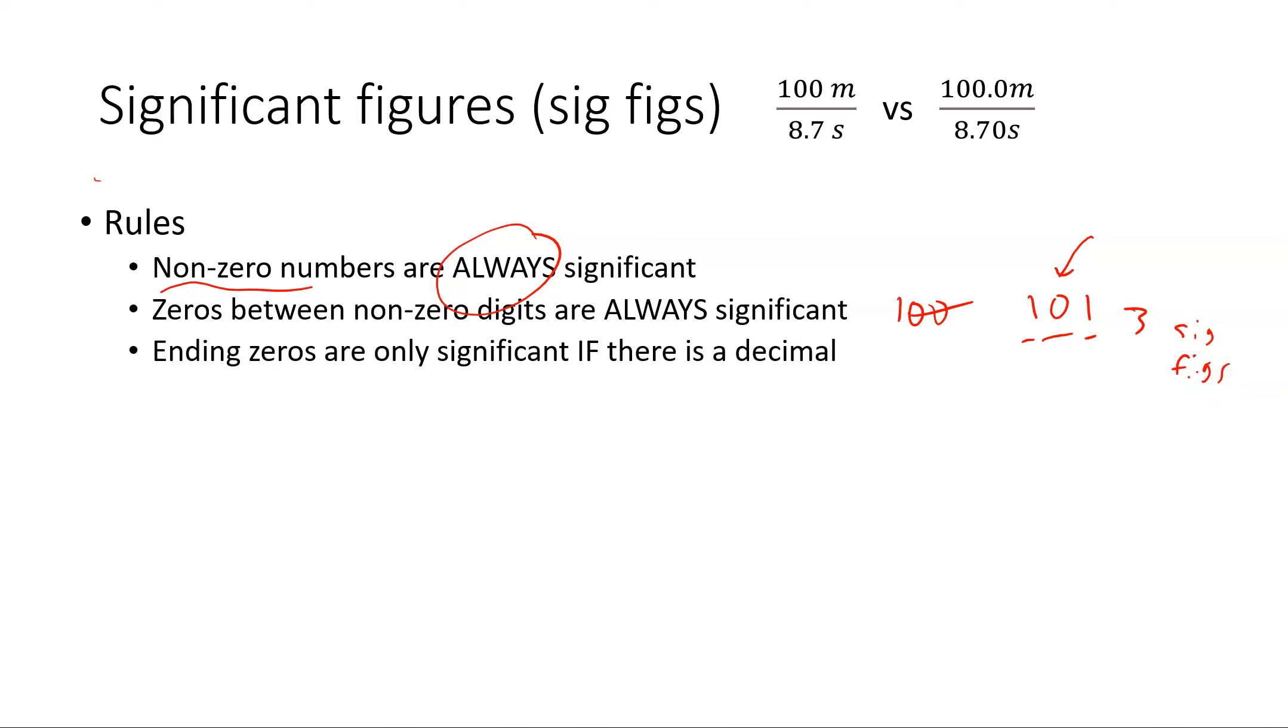Now ending zeros - we have zeros at the end of a number, they're only significant if there is a decimal. And that comes into comparing 100 versus 100.0. So in the number just writing 100, those zeros are not significant because there's no decimal. So in just the number 100, that would be one sig fig, that one number that's not a zero. Now when I write it as 100.0, what I did by adding that point zero is I said that I measured that 100 pretty precisely. So now that has four sig figs.